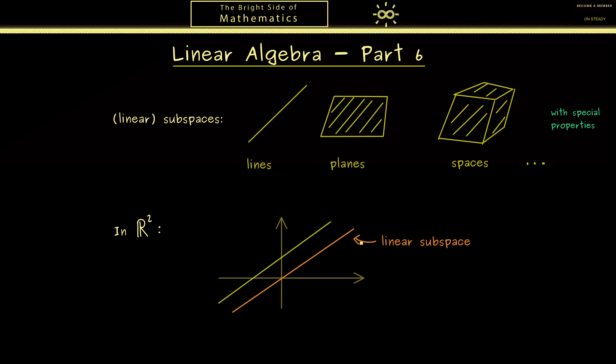And here you can immediately remember that we need the origin such that the line is a linear subspace. Otherwise we would talk of an affine subspace.